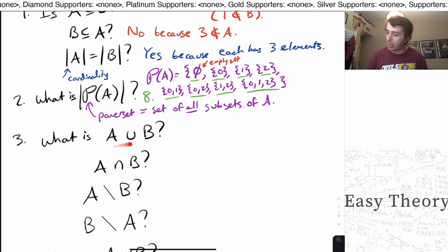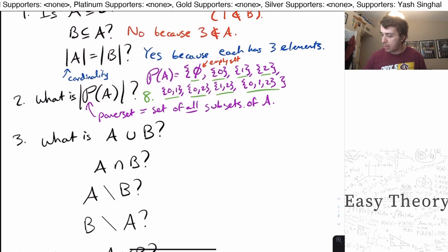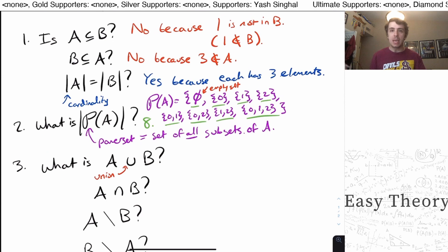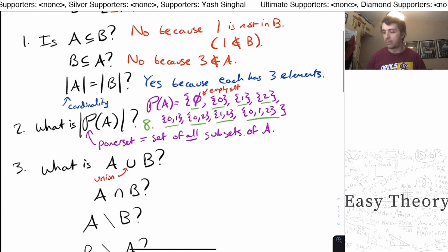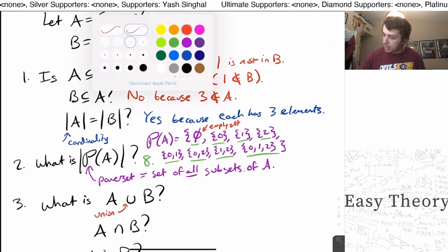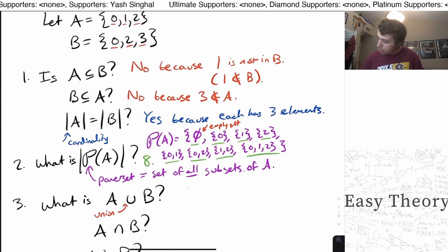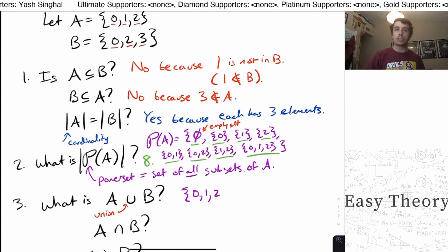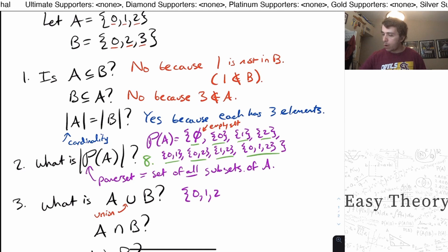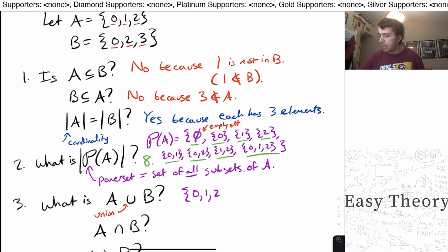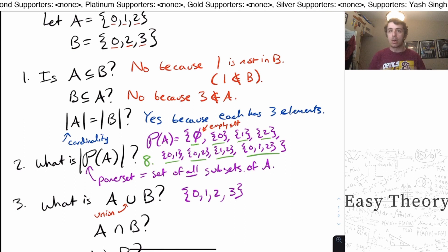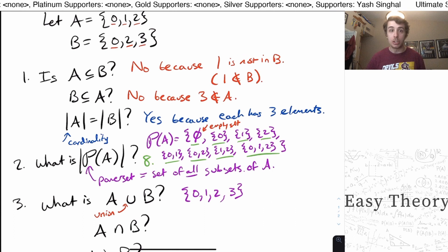Now let's think about the union of A and B. The little U represents union — that means take everything in A and everything in B, put them all together, and eliminate duplicates. So we take everything in A: 0, 1, 2, and add everything in B. We've already added 0 and 2; the only thing not yet added is 3. So the union is {0, 1, 2, 3}.